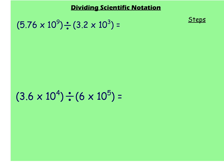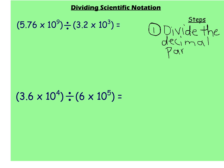There will also be 3 steps when you are dividing scientific notation — it's really very similar. We start out with dividing the decimal parts, the first two numbers in the scientific notation. So I'll take 5 and 76 hundredths divided by 3 and 2 tenths, and when I do that I get 1.8.